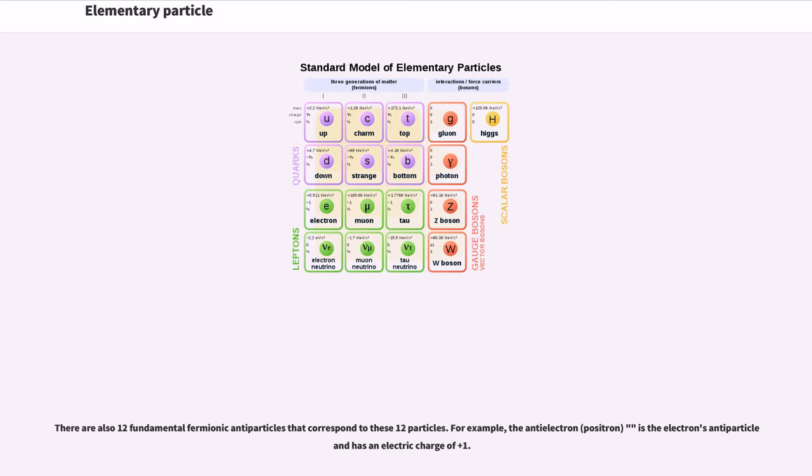There are also twelve fundamental fermionic antiparticles that correspond to these twelve particles. For example, the antielectron (positron) is the electron's antiparticle and has an electric charge of plus one.